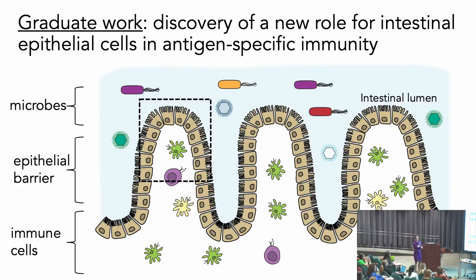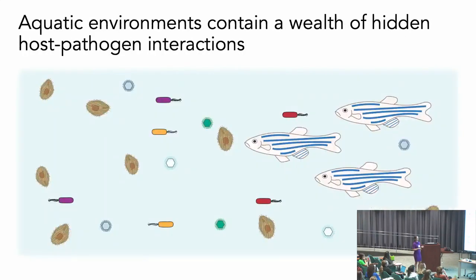Moving to my postdoctoral work and future research program, I wanted to take my skills as a cellular immunologist and apply them to a different complex ecosystem. So I moved from the intestine of the mouse into the aquatic ecosystem. Like the intestine, this is an impressively complex place, but unlike the intestine, we actually really don't know a lot about the immunology that happens here yet.